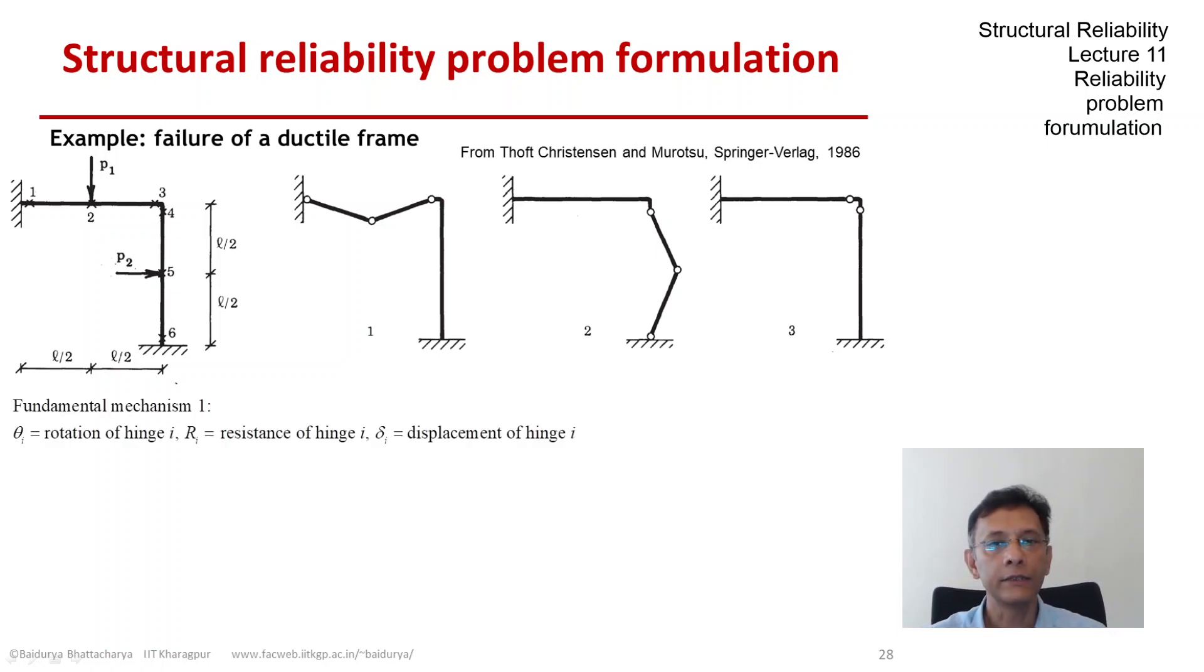Let's define theta I as the rotation of hinge I, I going from 1 to 6. Let R I be the plastic moment resistance at hinge I, and let delta I be the displacement of hinge I.